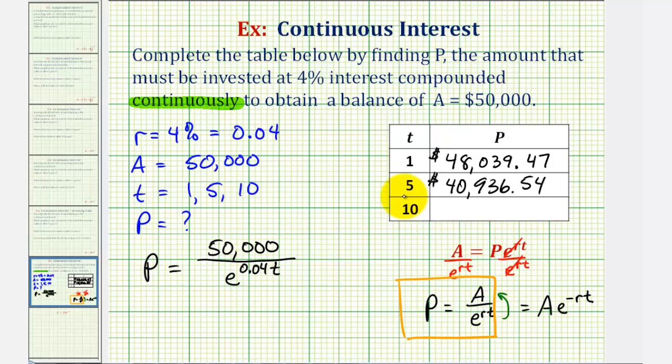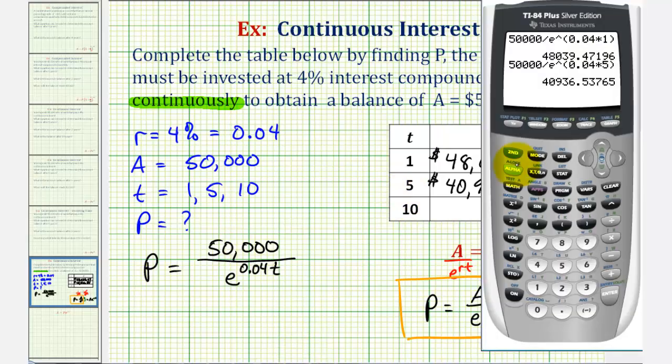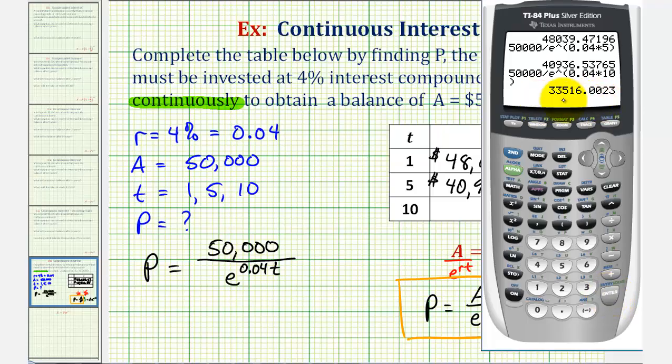And after the last question, T is ten. So I'm going to press second enter, and then change the five to a ten, since T is now ten years. Rounding to the nearest penny, this would be $33,516.